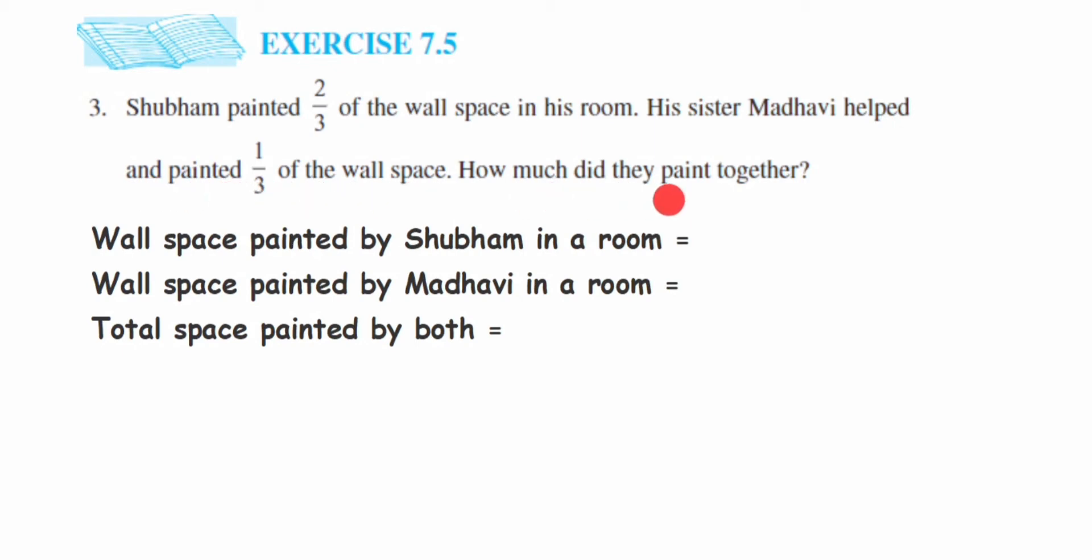So let me write down what we know from the question. They have given two things to us. The first one is Shubham painted two-thirds of the wall space in his room, and his sister Madhavi also helped him and she painted one-third of the wall. So these two things we know, and they're asking us together how much they have painted. So we're going to write down what we know from the question.